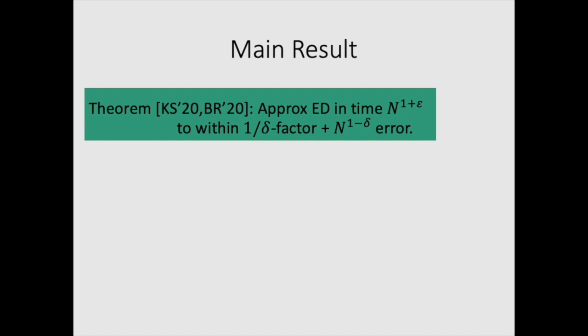We now formally state the main result. We showed that for any epsilon, we can approximate edit distance in time n to the 1 plus epsilon, with a multiplicative factor of 1 over delta, and an additive error of n to the 1 minus delta.